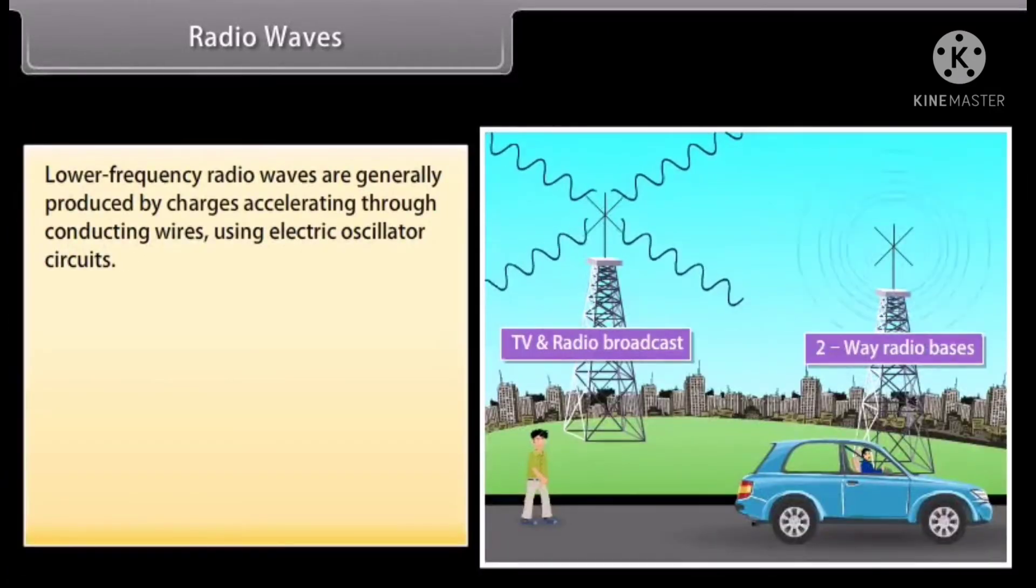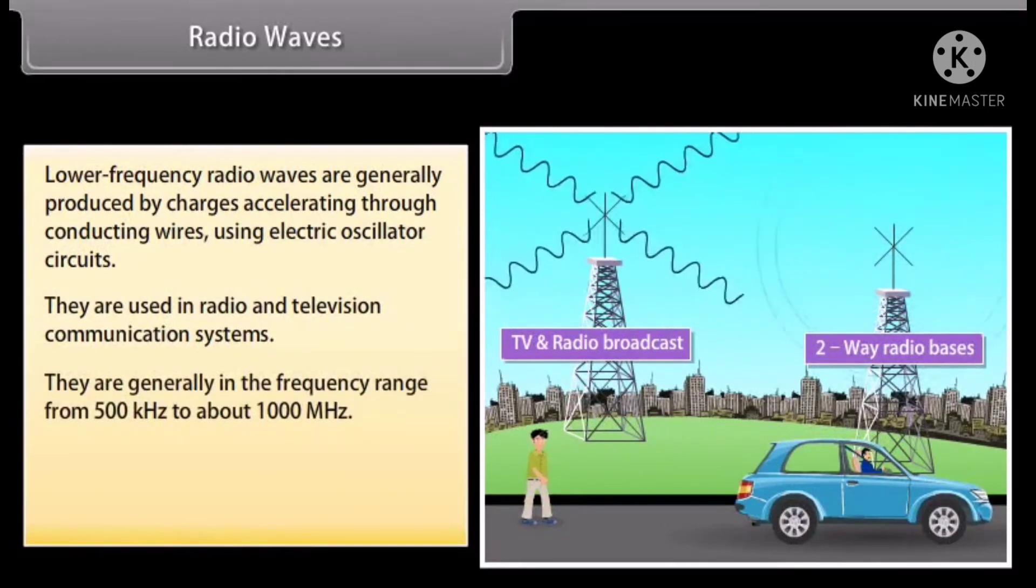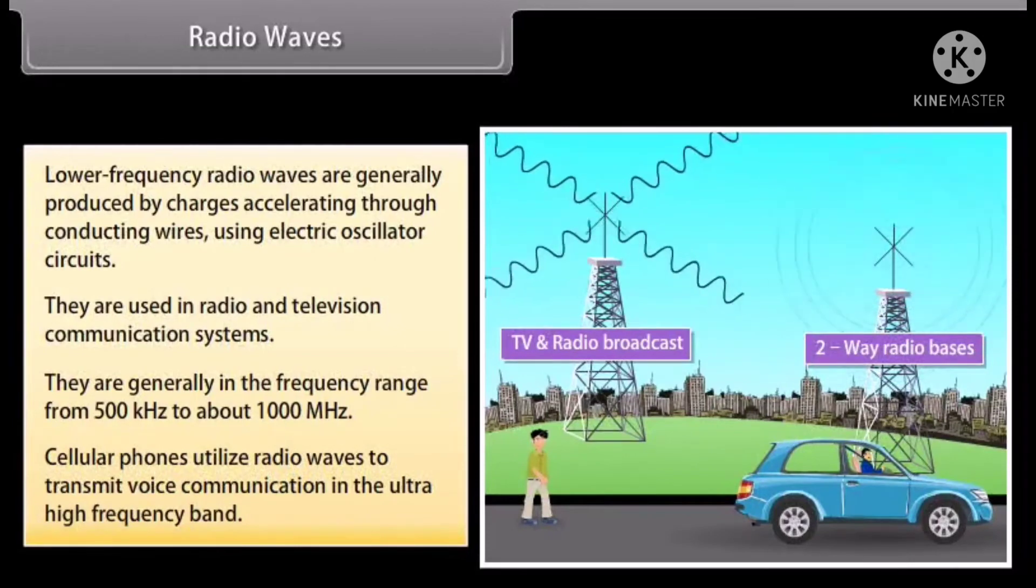Radio waves: Lower frequency radio waves are generally produced by charges accelerating through conducting wires using electric oscillator circuits. They are used in radio and television communication systems. They are generally in the frequency range from 500 kilohertz to about 1000 megahertz. Cellular phones utilize radio waves to transmit voice communication in the ultra-high frequency band.